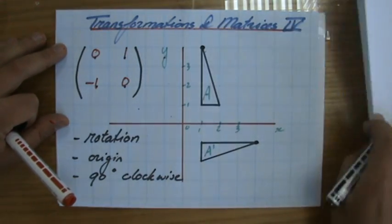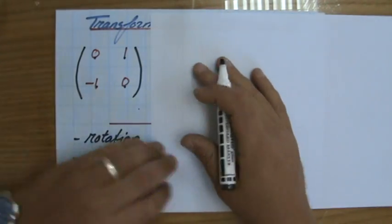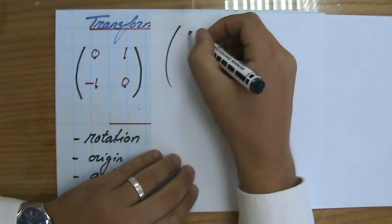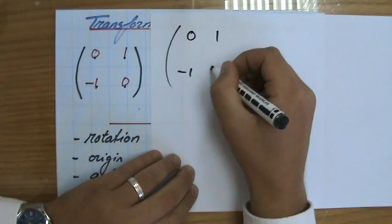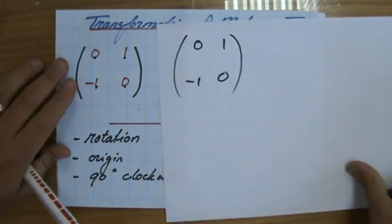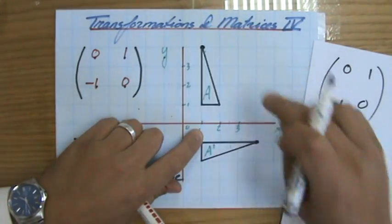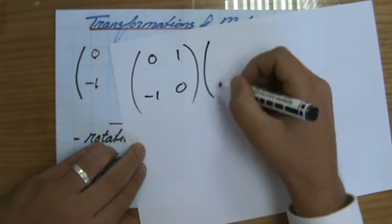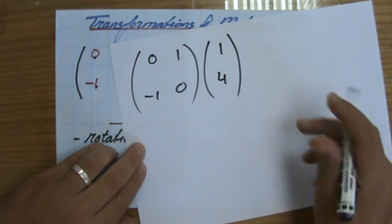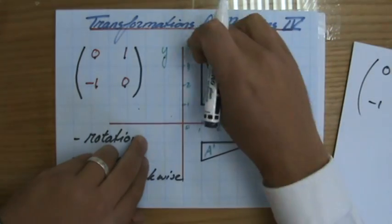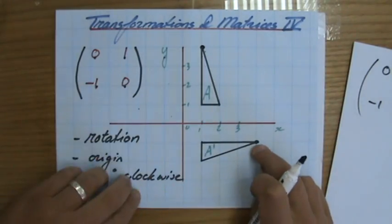So if I say that is my matrix, if I say the matrix [[0,1],[-1,0]] describes this transformation, then if I multiply it by the coordinate of that point (1,4), if I multiply it by that particular coordinate (1,4) then I should get that coordinate there as I showed in my previous videos.